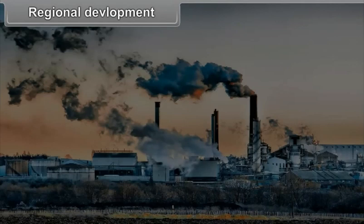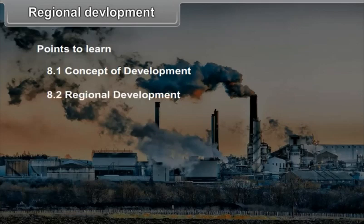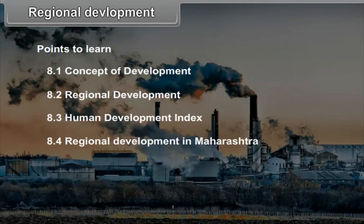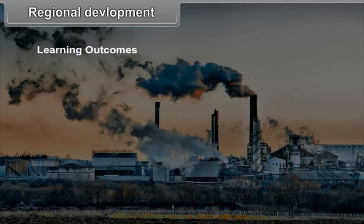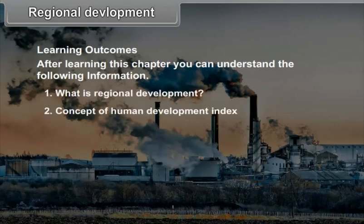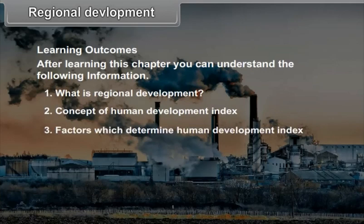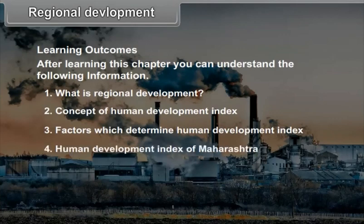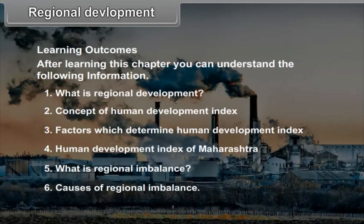Chapter 8: Regional Development. Points to Learn: 8.1 Concept of Development, 8.2 Regional Development, 8.3 Human Development Index, 8.4 Regional Development in Maharashtra. Learning Outcomes: After learning this chapter, you can get the following information — what is Regional Development, the concept of Human Development Index, factors which determine Human Development Index, Human Development Index of Maharashtra, what is Regional Imbalance, and causes of Regional Imbalance.